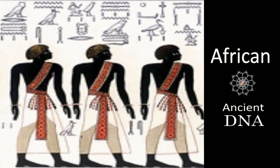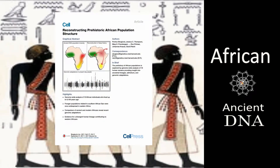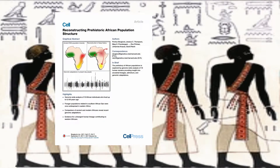In all our ancient DNA paper reviews so far, we have only covered the humans that migrated out of Africa. So it is more than time to review a paper on the prehistoric migration patterns of Africa itself. The paper 'Reconstructing Prehistoric African Population Structure' in Cell does just that.